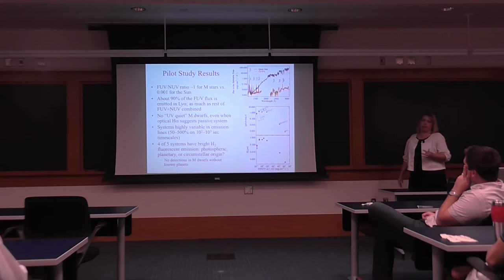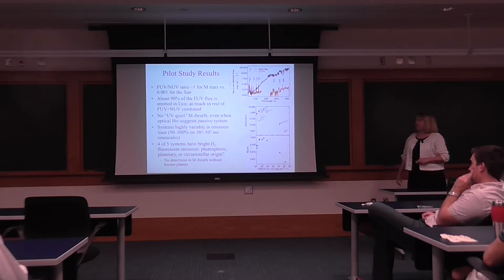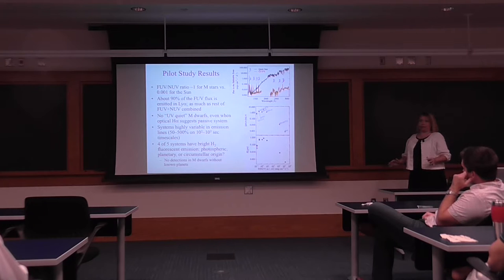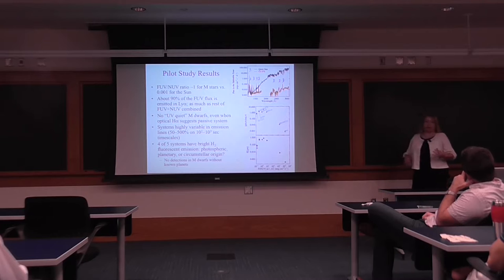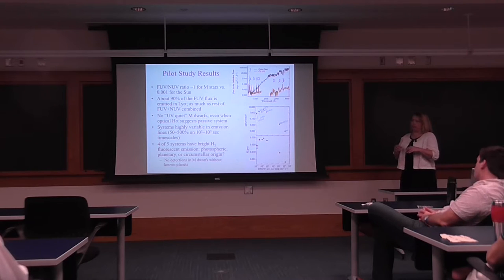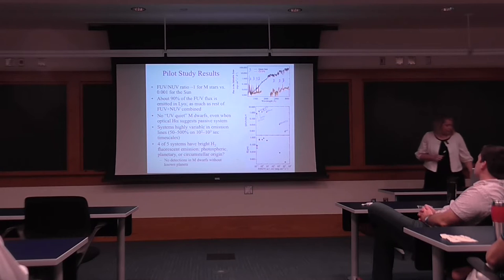The other thing that came out of our pilot study is that there's no such thing as a UV quiet M star. Even when you look at standard optical indicators like H alpha or calcium 2 H and K, it suggests they're either quiescent or only weakly have a weak chromosphere. They all varied. They varied 50 to 500% on timescales of 100 to 1,000 seconds. That suggests we need to get much better information about how we can trace what's happening in the UV based on proxies in the optical. As an aside, we had one system with low signal noise. But of all the other systems, there was bright molecular hydrogen fluorescent emission. There's a number of places that could come from. It could come from the photosphere of the star, but it could also come from the planet itself. Or it could come from circumstellar material if the planet's atmosphere is being blown off. The other five stars that were in the Hubble archive for which we don't know of any exoplanets don't have molecular hydrogen.